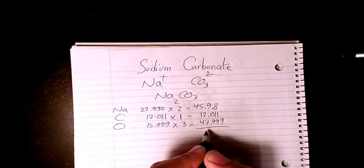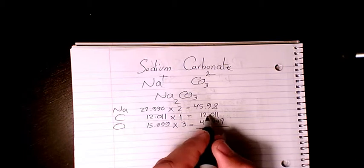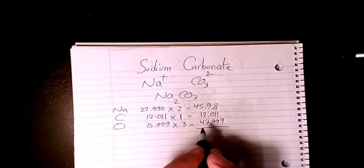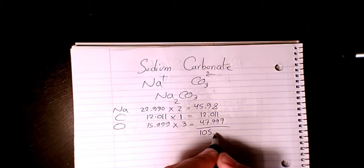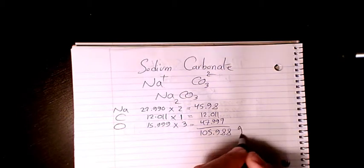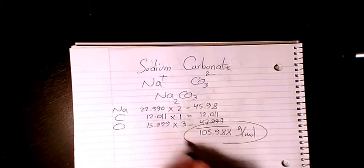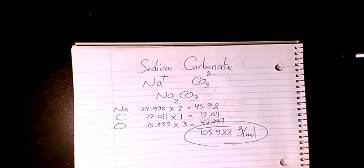45.98 plus 12.011 plus 47.997, that makes it 105.988 grams per mole. That's the molar mass or molecular weight of sodium carbonate.